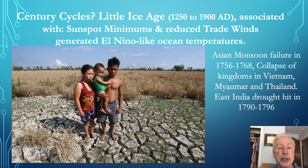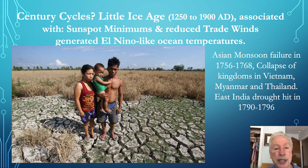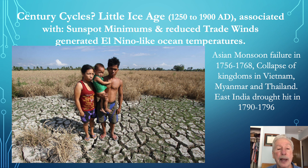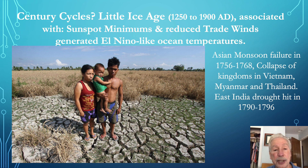El Niño-like conditions during the Little Ice Age resulted in a failure of the Asian monsoons between 1756 and 1768 and the collapse of kingdoms in Vietnam, Myanmar, and Thailand. Similarly, El Niño-like conditions caused the East Indian droughts between 1790 and 1796, which caused widespread devastating starvation.